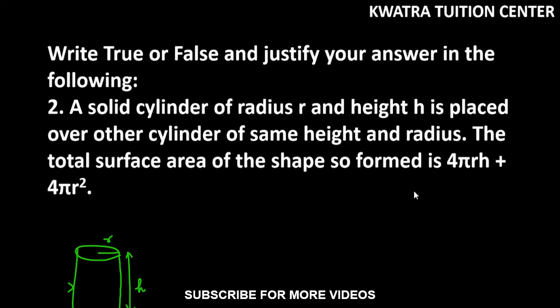Let's start with question number 2. This is from NCRD Exemplar. It says: a solid cylinder of radius r and height h is placed over another cylinder of the same height and radius. The total surface area of the shape so formed is 4πrh plus 4πr².